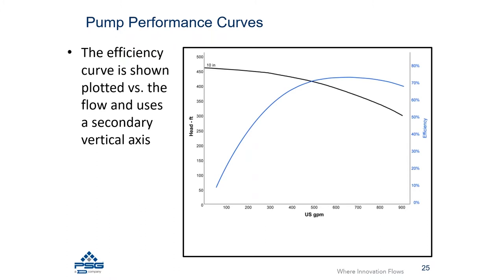A second curve presented for a pump is the efficiency curve. The efficiency curve has to be plotted against a different axis. In this example, an efficiency axis has been added on the right side of the chart in blue, and a curve representing pump efficiency has been added as well.